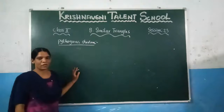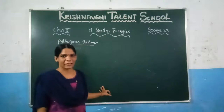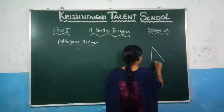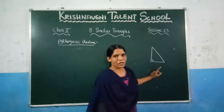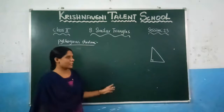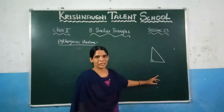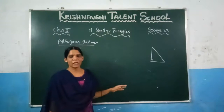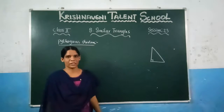Let us look at the Pythagorean theorem. The Pythagorean theorem is applicable for right angle triangles. If you consider any right angle triangle, you know that the longest side in the triangle is called the hypotenuse. In a right angle triangle, the square of the hypotenuse is equal to the sum of the squares of the other sides. We have solved many problems using this theorem, but now in this class we are going to prove this theorem.